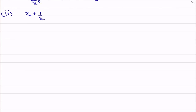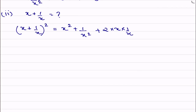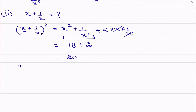Now for the second part, we need to find the value of x plus 1 by x. We will use x plus 1 by x whole squared. Since the sign is positive, we apply the a plus b whole square formula: a squared plus b squared plus 2ab, where a is x and b is 1 by x. The x and x cancel, and we substitute the value from part one: x squared plus 1 by x squared equals 18. So we get 18 plus 2, which equals 20. This is the value of x plus 1 by x whole squared.